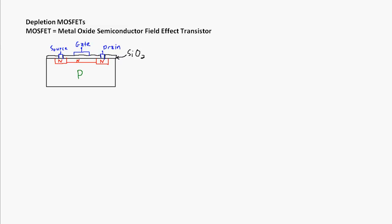A depletion MOSFET is one of the two broad categories of MOSFET devices, where MOSFETs are metal oxide semiconductor field effect transistors. It's quite a mouthful, but we'll get into some details about why it's called that.